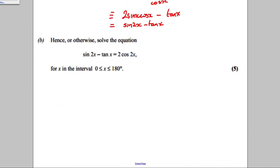So, let's replace this here with a tan x and a cos 2x. And that's going to be equal to 2 cos 2x. So, subtract this off both sides. So, you've got 0 is 2.